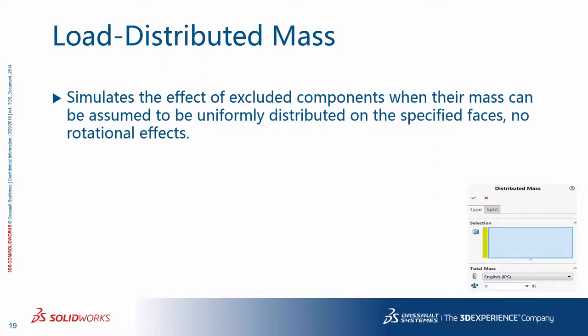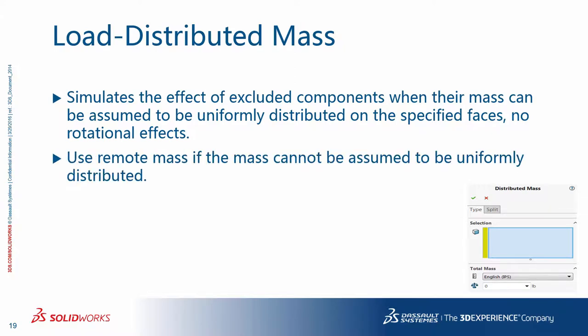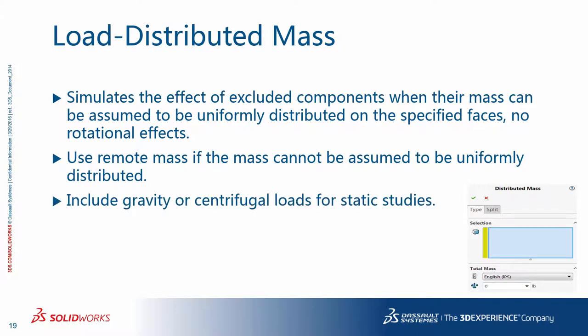Using distributed mass as loads distributes a specified mass on selected faces for use with static, frequency, buckling, and linear dynamic studies. It simulates the effect of excluded components when their mass can be assumed to be uniformly distributed on the specified faces. The distributed mass is assumed to lie directly on the selected faces, so rotational effects are not considered. Use a remote mass if the mass cannot be assumed to be uniformly distributed. For static studies, you should define either gravity or centrifugal loads in order for the distributed mass to be effective. The program internally calculates the static load based on the acceleration due to gravity or angular velocity and angular acceleration parameters defined in the respective load commands.